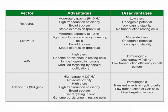In summary, these vectors differ in capacity, tropism, and stability of expression. Adenoviruses and retroviruses are the most used in clinical trials, followed by AAV. Some disadvantages include: low titers, oncogenic potential of retroviruses due to insertional mutagenesis, immunogenicity of adenoviruses, the low capacity of AAV (about 5 kb), and the tendency of adenovirus to target the liver when given intravenously. Choosing the right vector depends on the specific application and the properties needed.